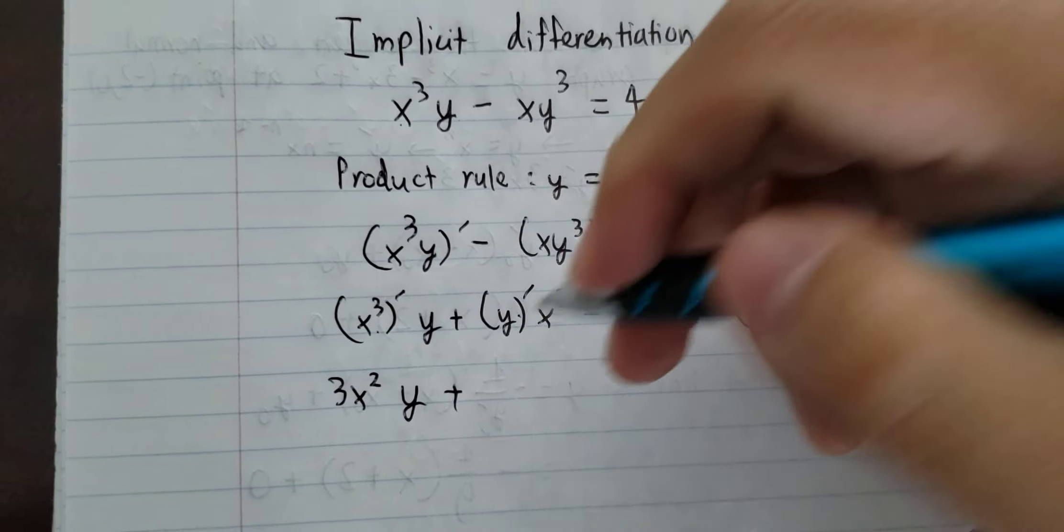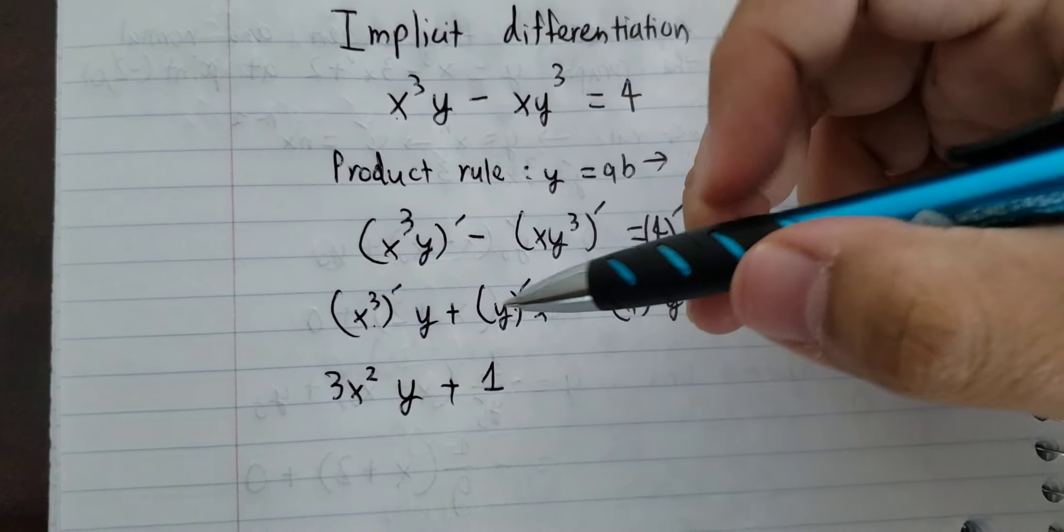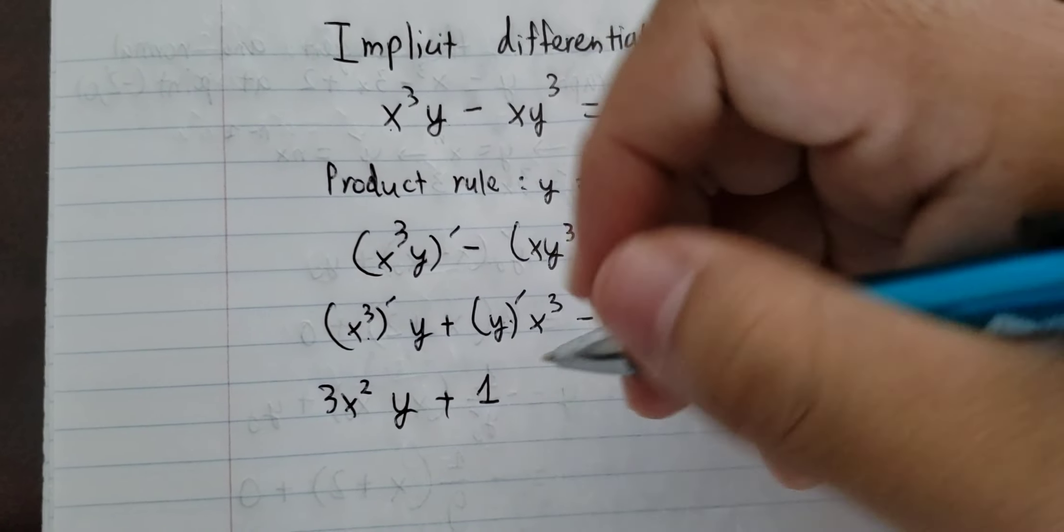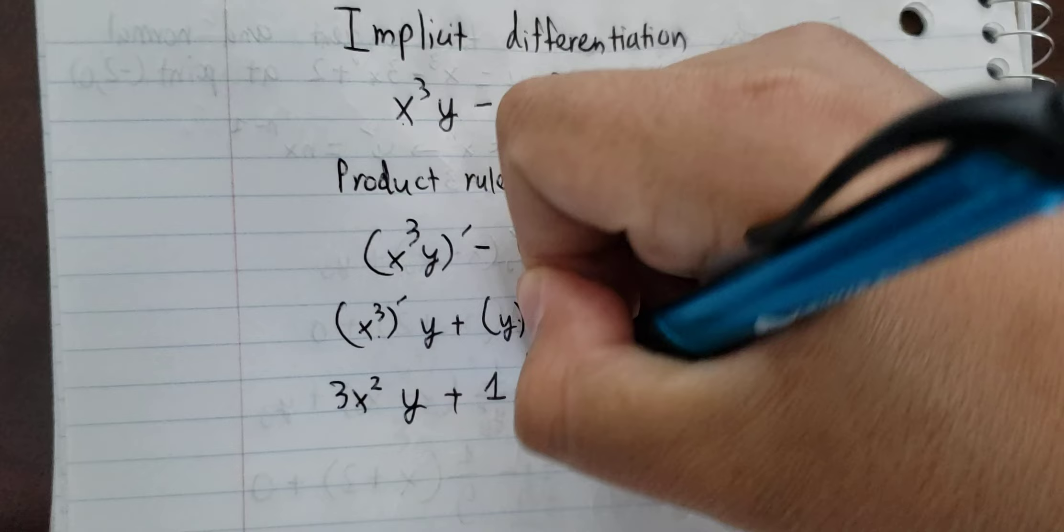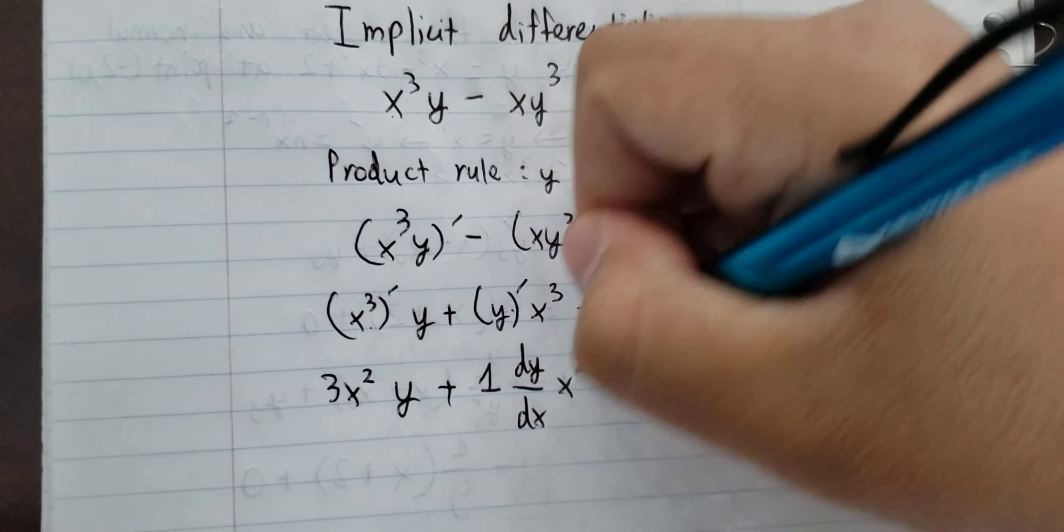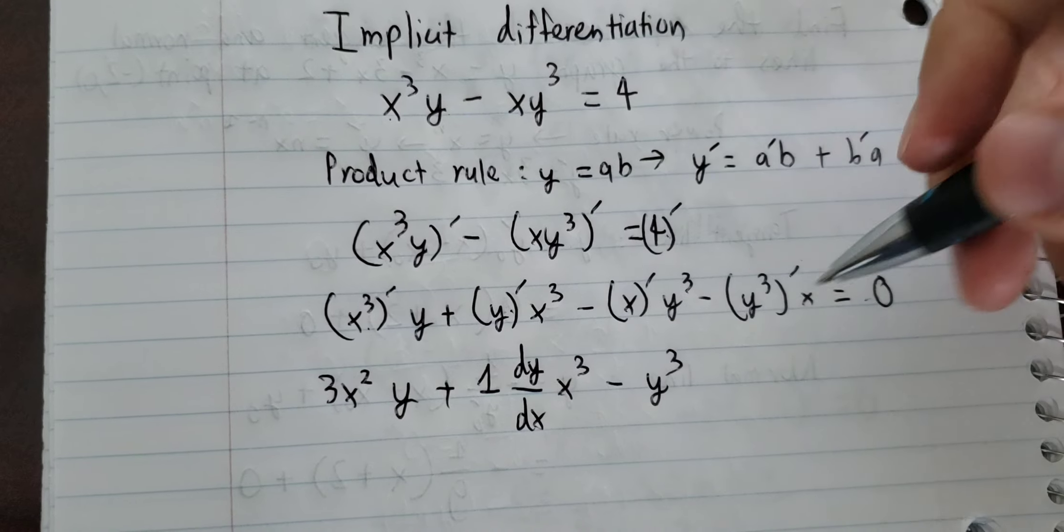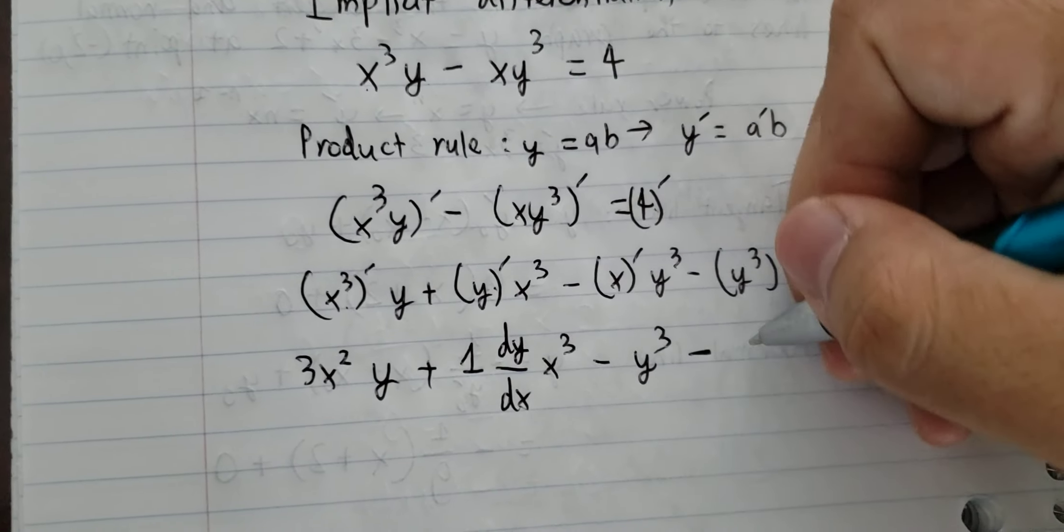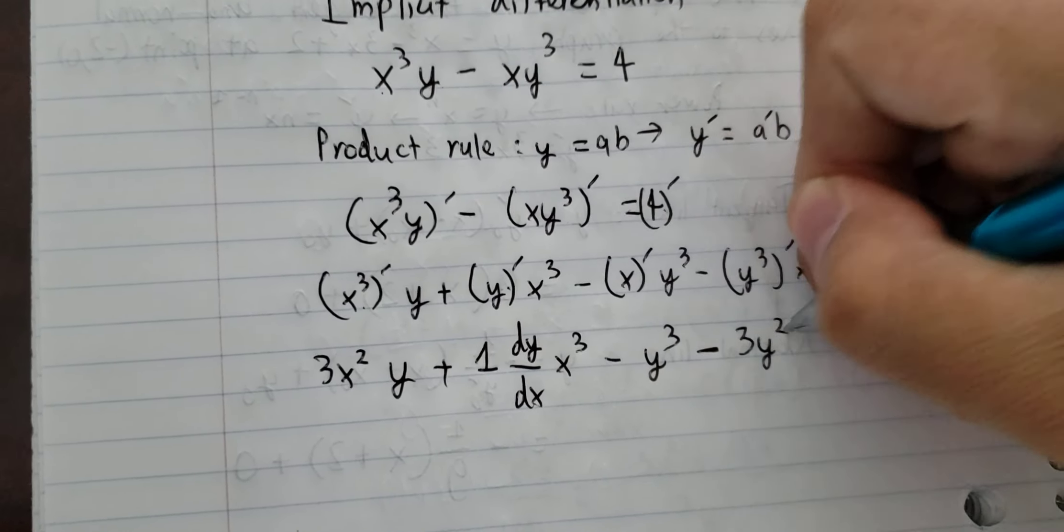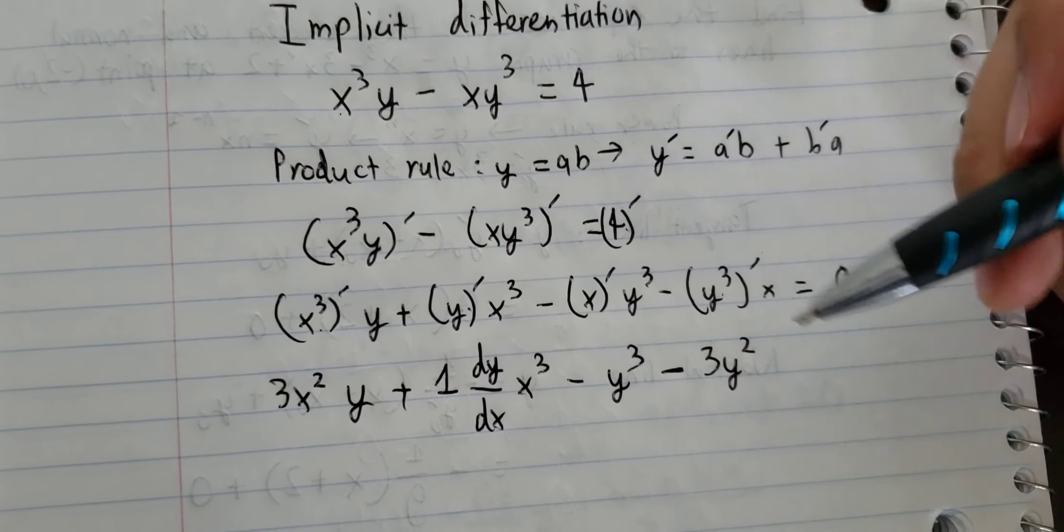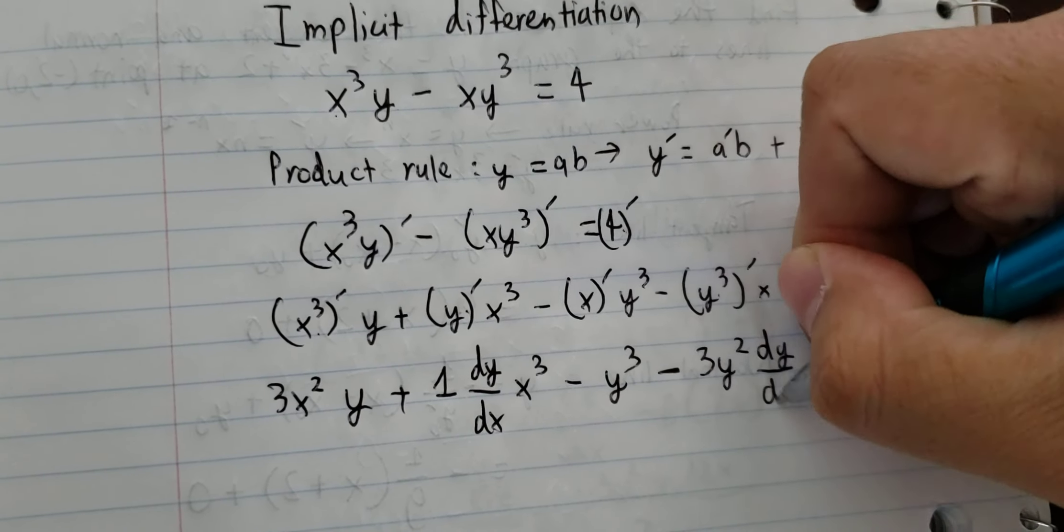For this term, we have one because we have y, so we have dy over dx. This one we have 3y squared because we have y, so we have dy over dx.